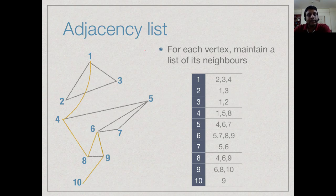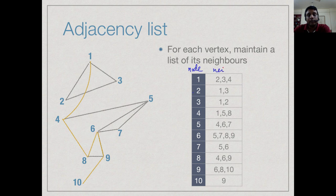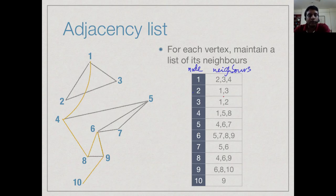This motivates another representation called an adjacency list. In an adjacency list, we explicitly maintain for every vertex the list of its neighbors. For example, vertex 1 is connected to 2, 3, and 4, so the list for vertex 1 is [2, 3, 4]. Vertex 2 is connected to 1 and 3, so its list is [1, 3]. To find neighbors of a node, we go to its entry and scan the list, in time proportional to the number of neighbors.